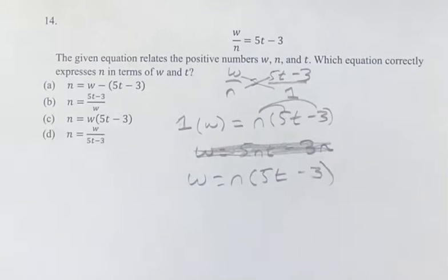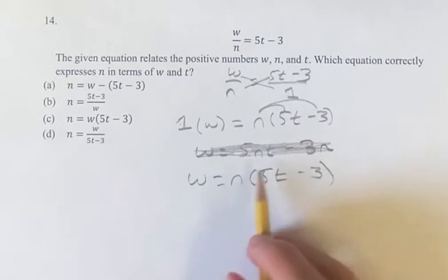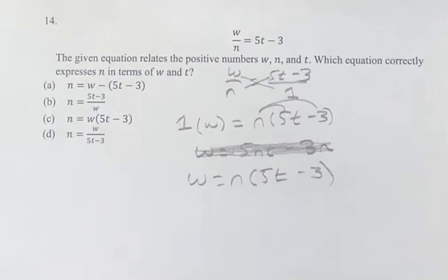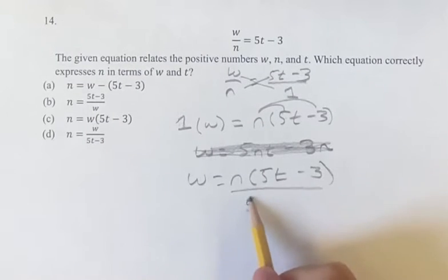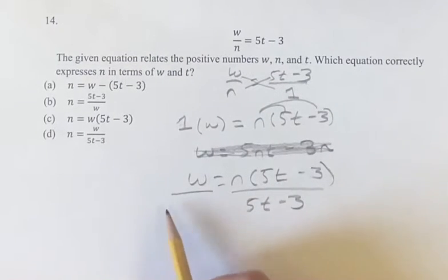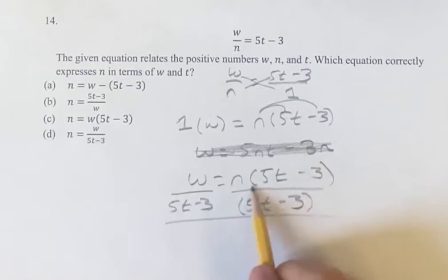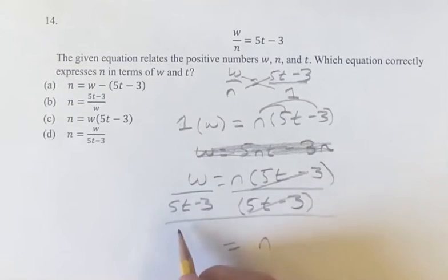We want to get n on its own. So rather than distribute it out and get it messed up in all these different terms, let's just divide both sides by 5t minus 3. Because over here we'll cancel and we'll get n on its own, which is what we were looking for. On the other side, we have w over 5t minus 3.